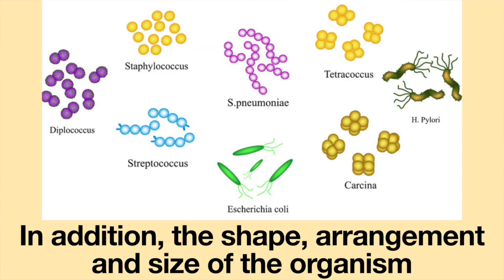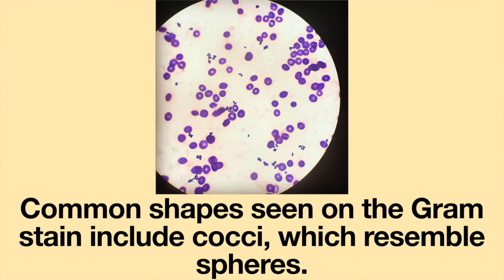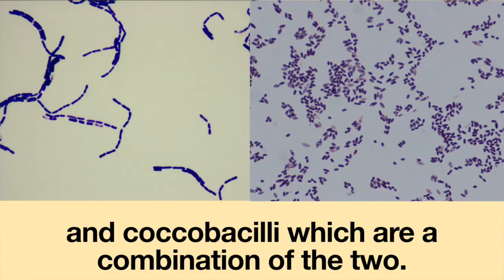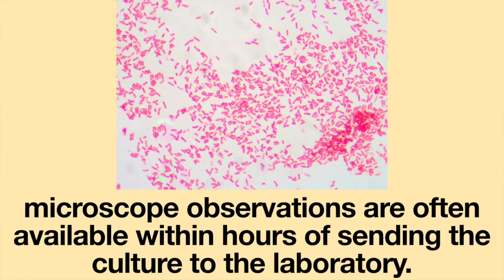In addition, the shape, arrangement, and size of the organism can provide further information to identify the bacteria. Common shapes seen in the gram stain include cocci, which resembles spheres; bacilli, which resemble rods; and coccobacilli, which are a combination of the two. Gram stain and microscope observations are often available within hours of sending the culture to the laboratory.